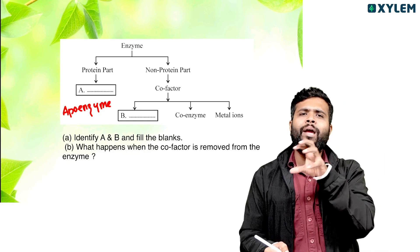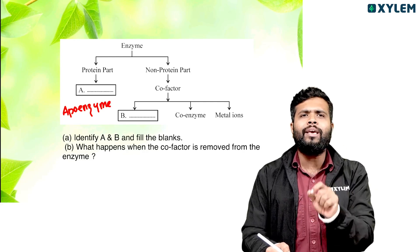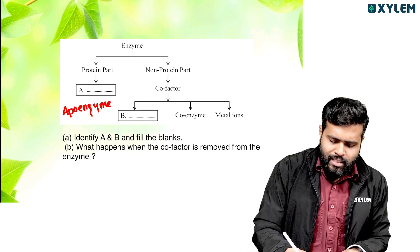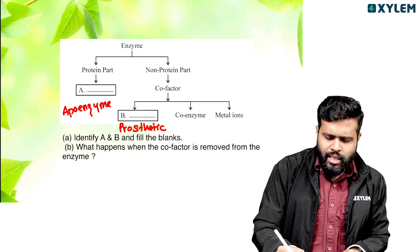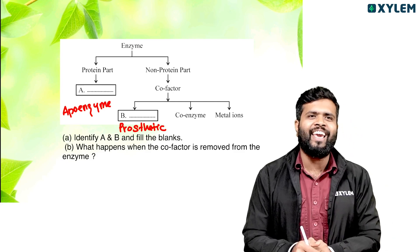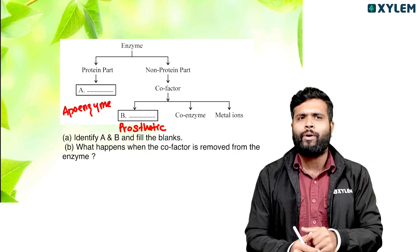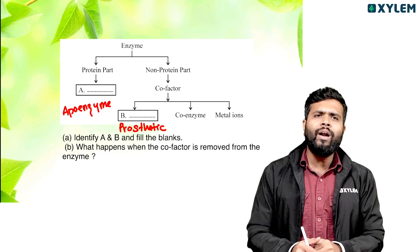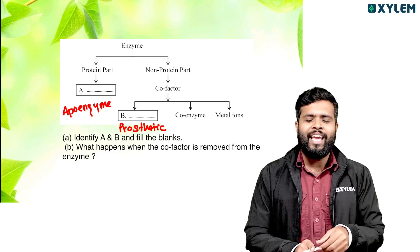There are three types of cofactors. Apo-enzyme is missing the prosthetic group — it is missing the prosthetic group. So A is the Apo-enzyme and B is the prosthetic group. Next question: what happens when the cofactors are removed from the enzyme?